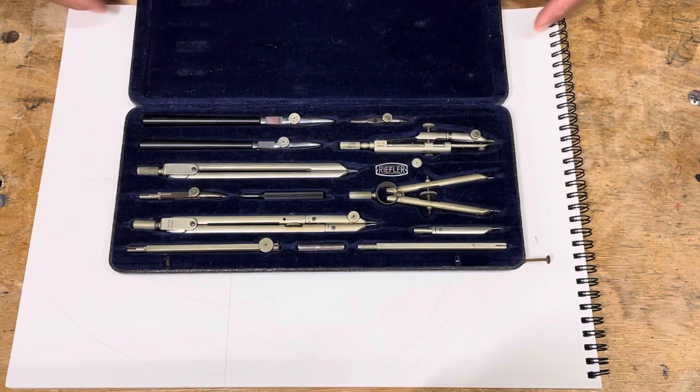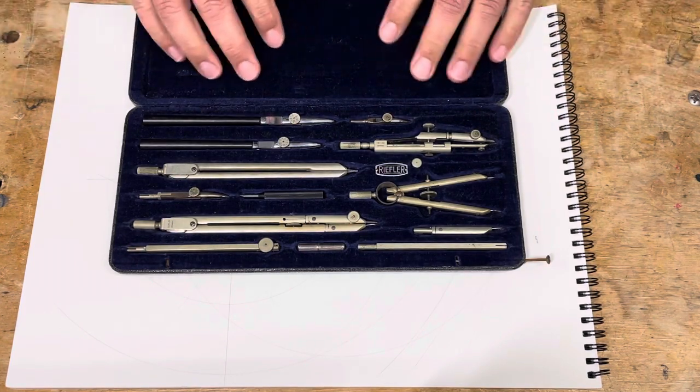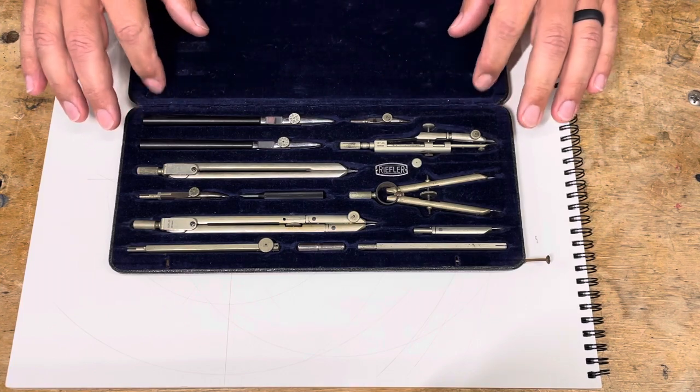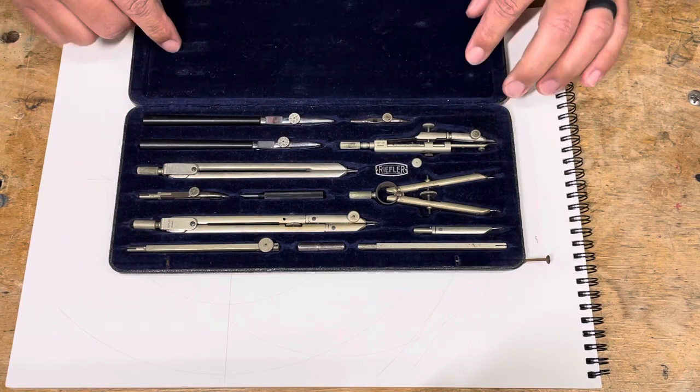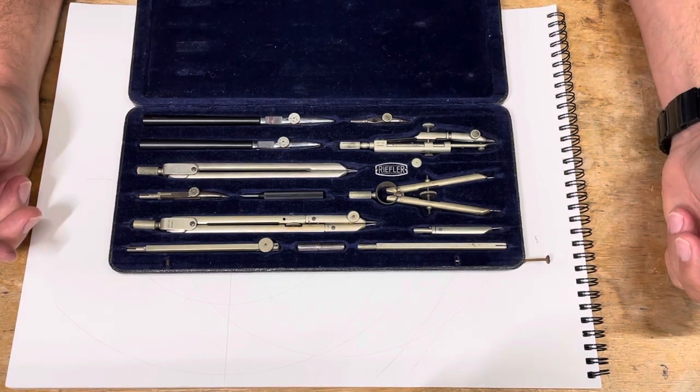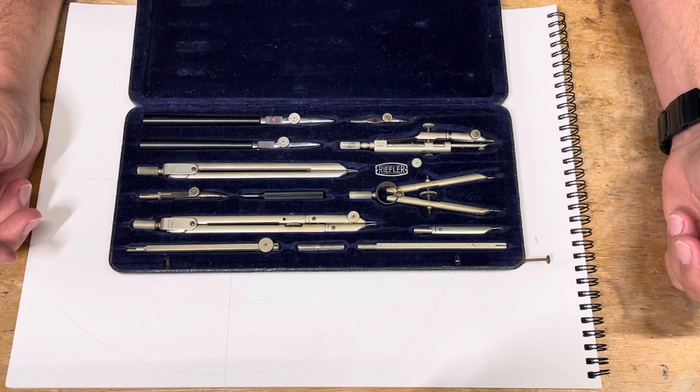And there we have it. So this set has this nice dark navy blue velvet. This is the F series.